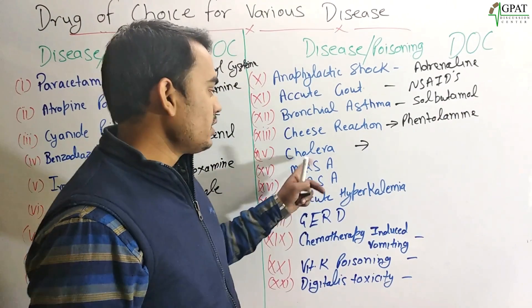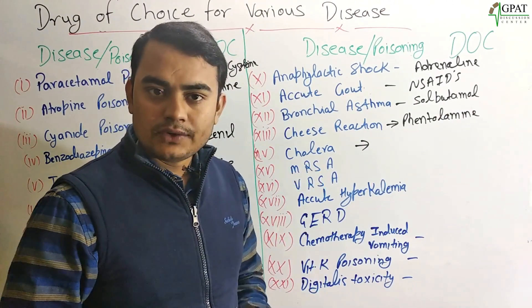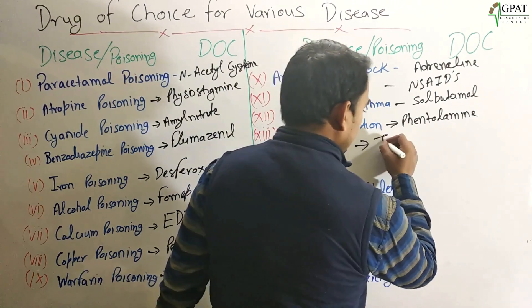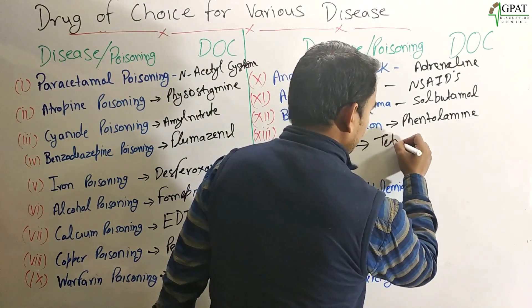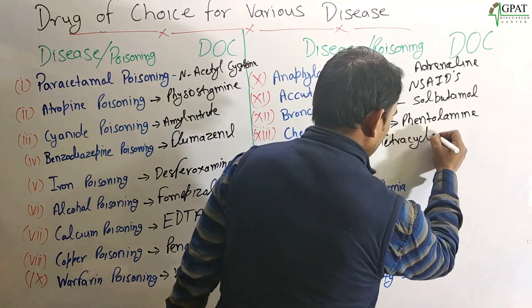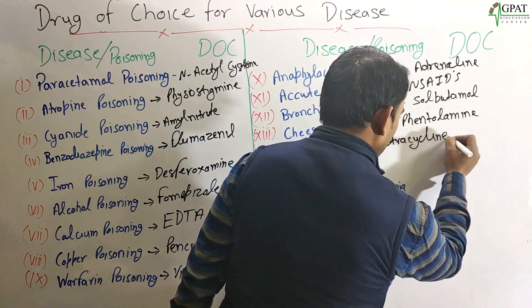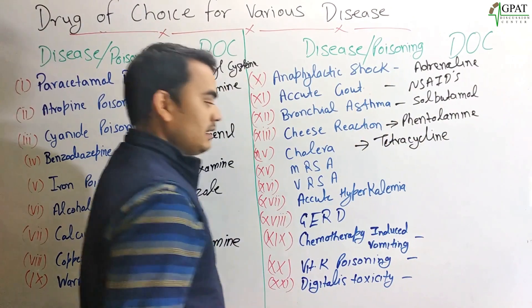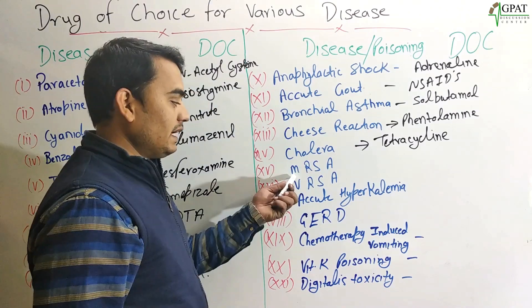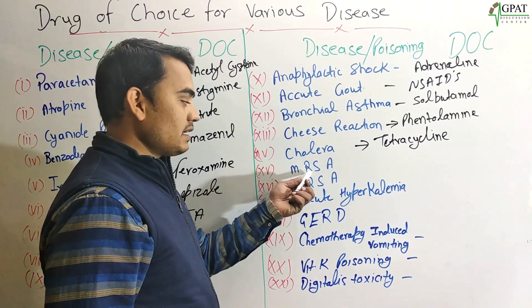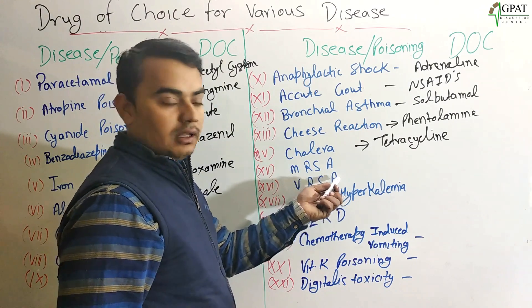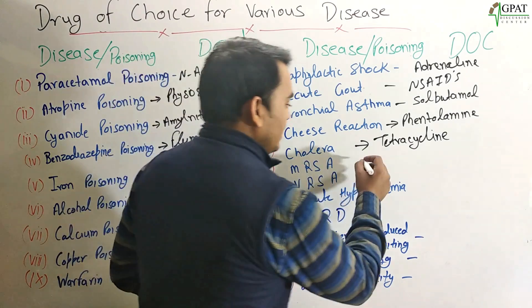For the cheese reaction, very important: Phentolamine is the drug of choice. Next: Cholera. The drug of choice for cholera is Tetracycline.